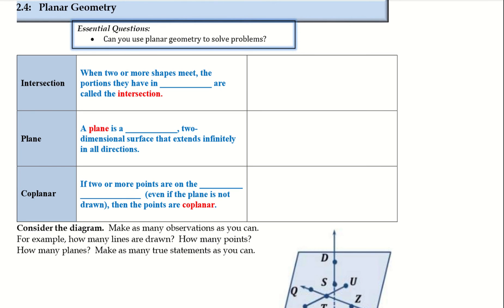Intersection: when two or more shapes meet, the portions they have in common are called the intersections. We talked about this with lines, where they intersect. We're going to be talking about planes today, so we can have a plane here, and another plane there, and they intersect right there.